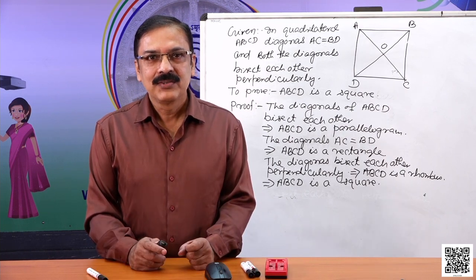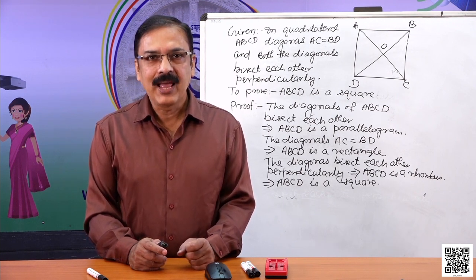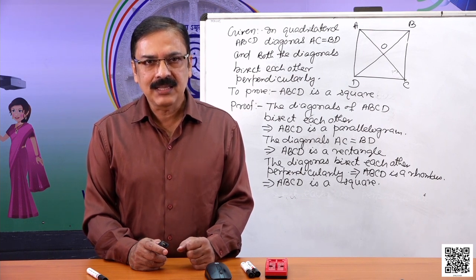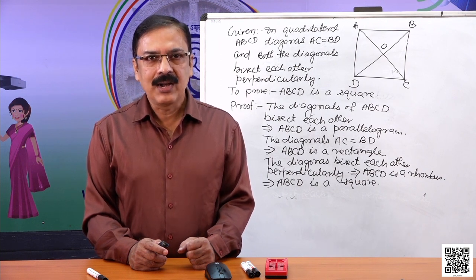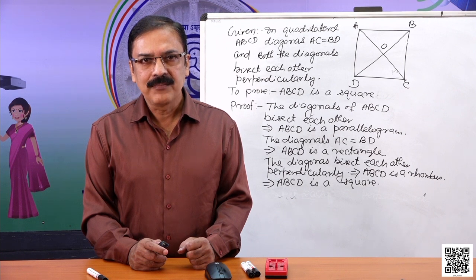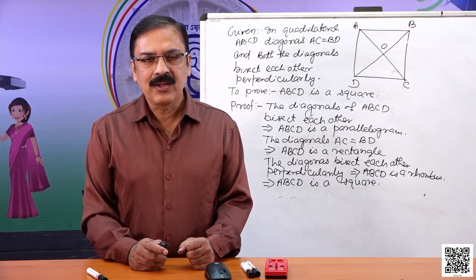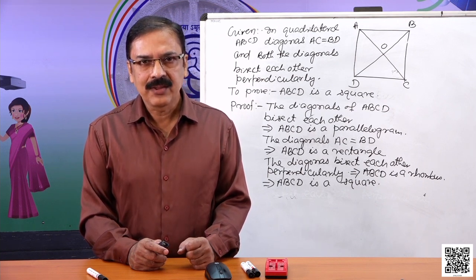Dear students, today we discussed the properties of a parallelogram — like the diagonals of a parallelogram bisect each other, and if the diagonals of a quadrilateral bisect each other, then it is a parallelogram. We also discussed different properties of square, rectangle, and rhombus. Hope you have understood it. Thank you.